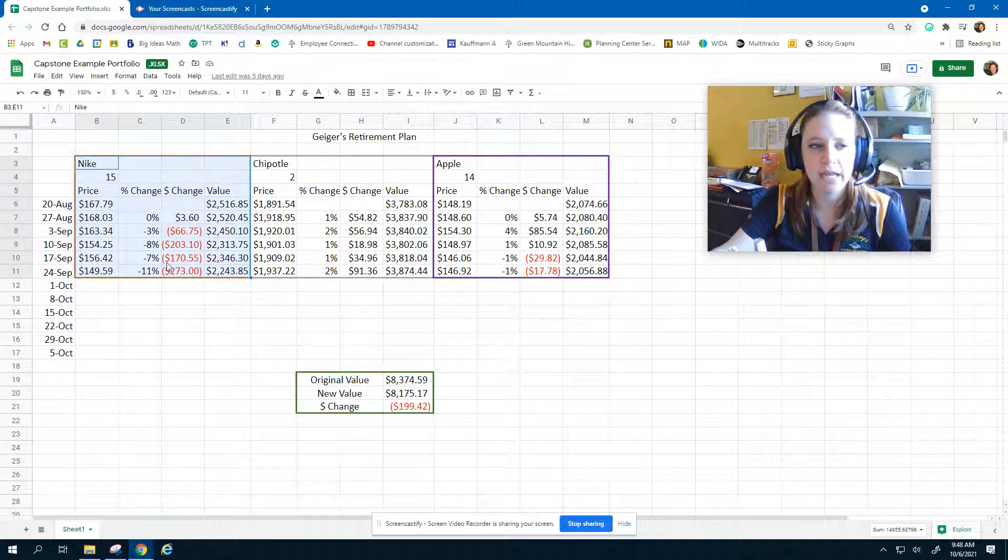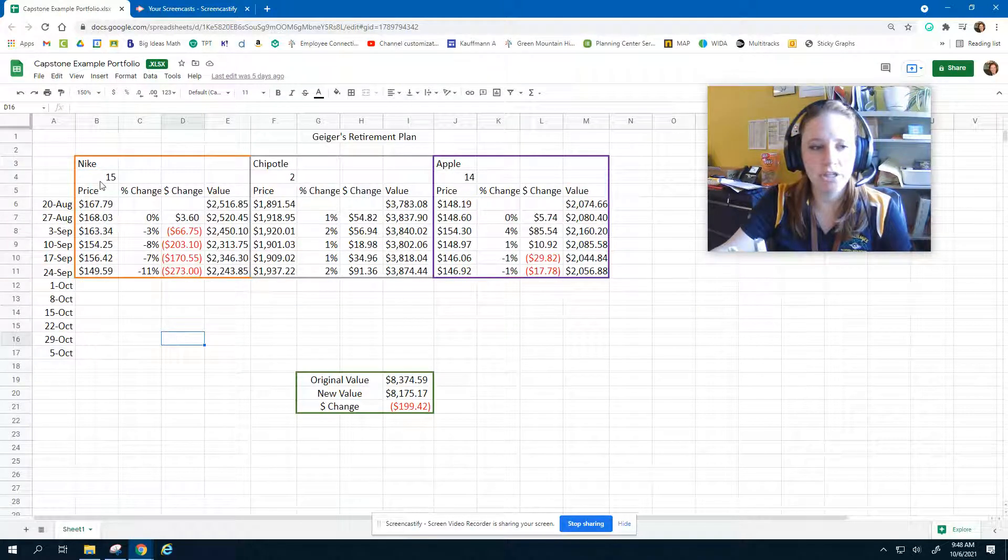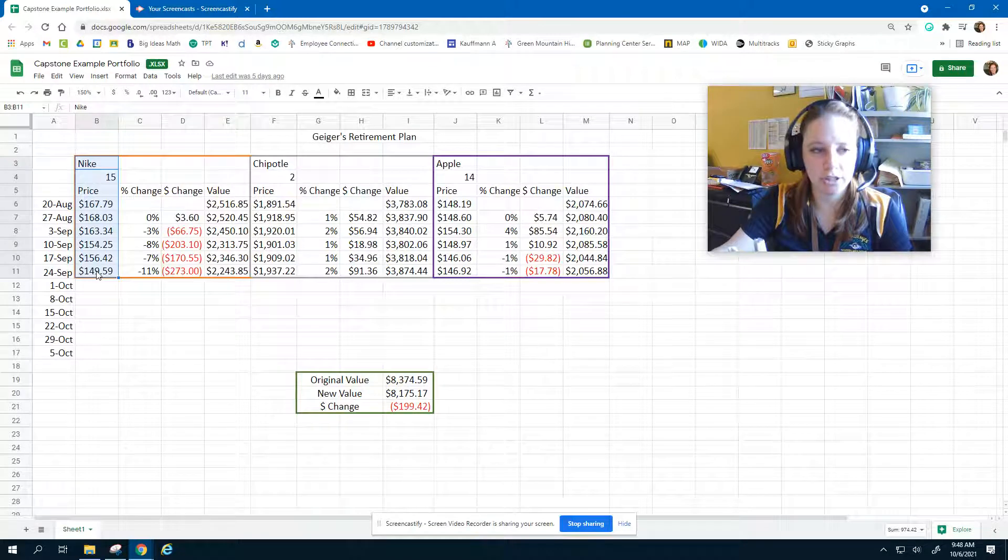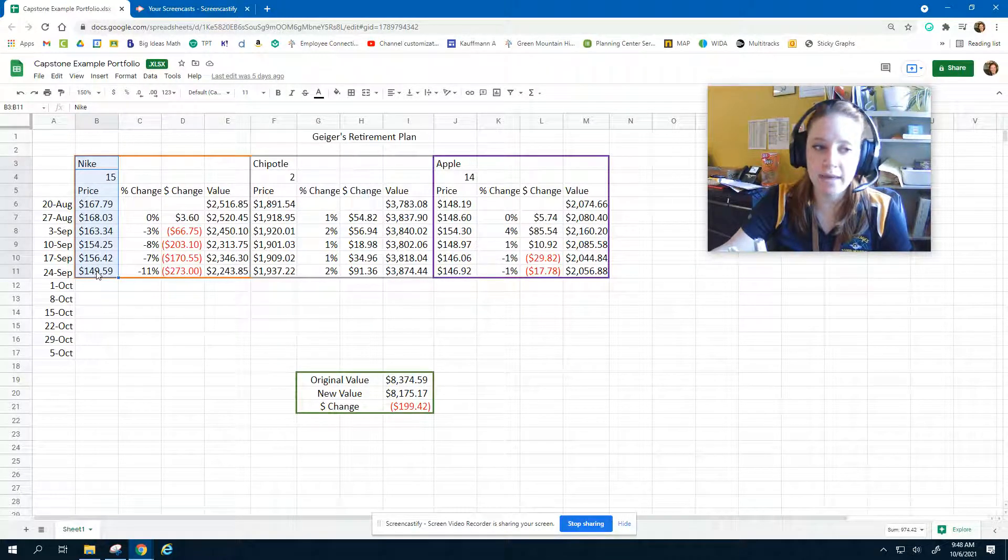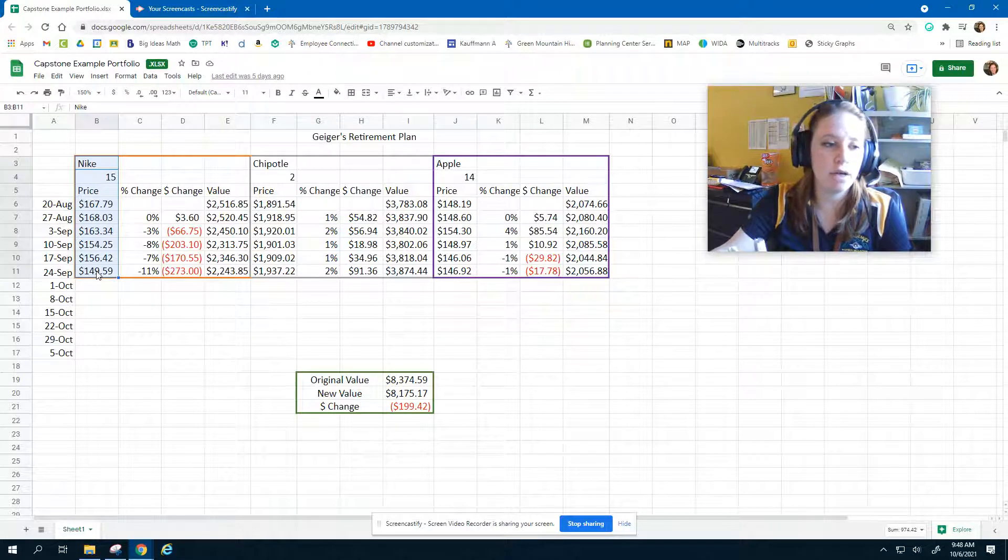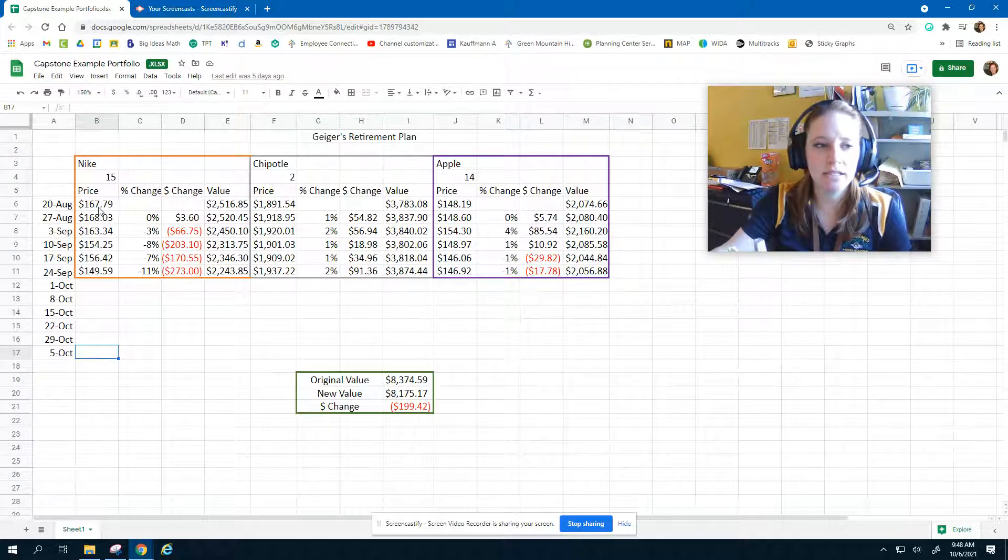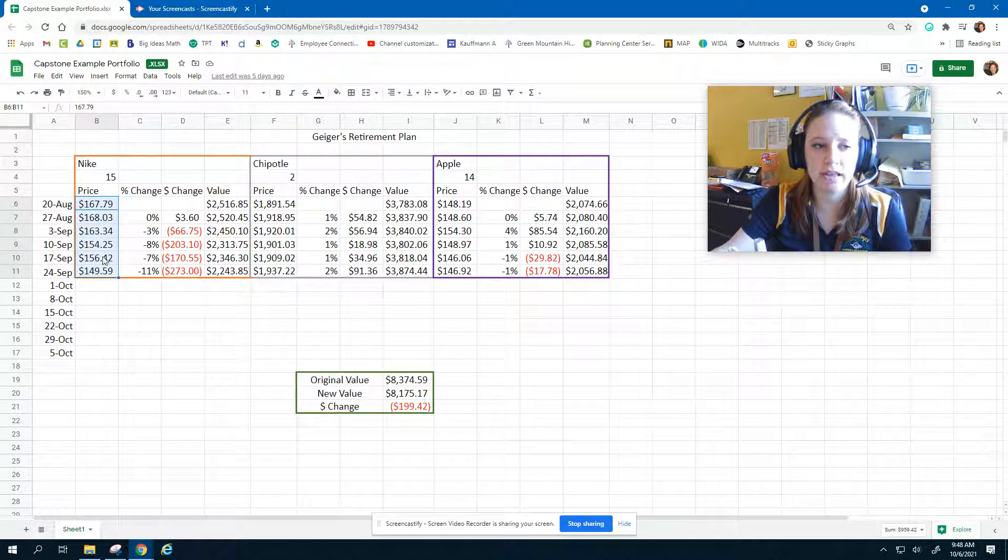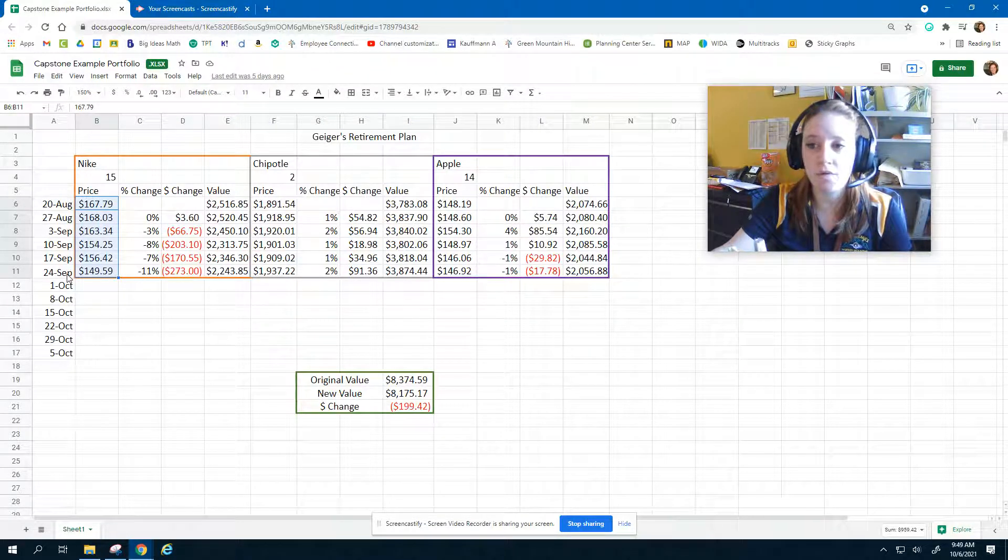You don't need to do all three. I'm going to choose Nike for this example. What you're going to do is focus on your price for making your equation. We're going to make an equation that could potentially make us a prediction at the 12-week mark about what the price would potentially be. We can see right now that this stock price is declining from $167 to $149 from August 20th to September 24th.